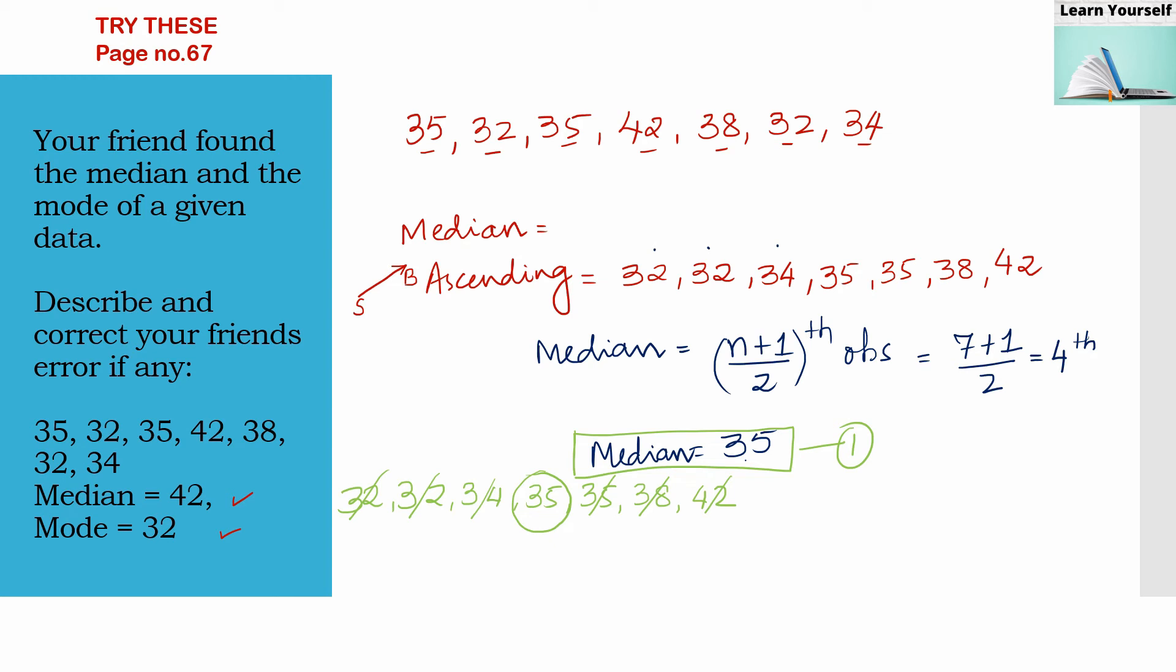Now let us find out about mode. So what is a mode? Mode is the most frequently occurring observation. So which observation is coming more often in this data? If you will see, here 32 is coming two times, and 35 is also coming two times. So both the numbers are coming twice. So here our mode is going to be 32 and 35 both.